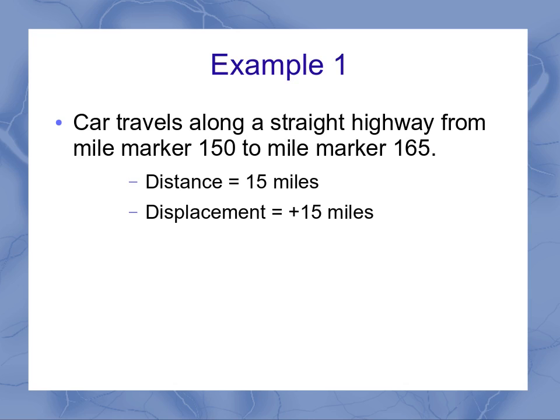The displacement is going to be a positive 15 miles. Again, these are the same quantities, but since displacement matters which direction we're moving, we specify a positive or negative. And since we're moving forward from 150 to 165, we call that a positive displacement.